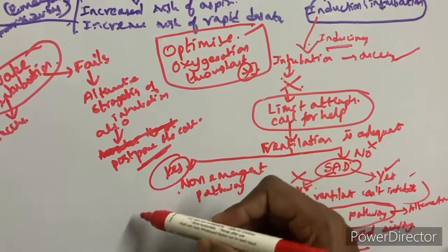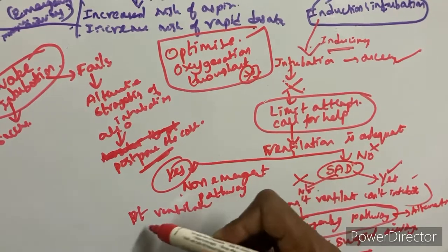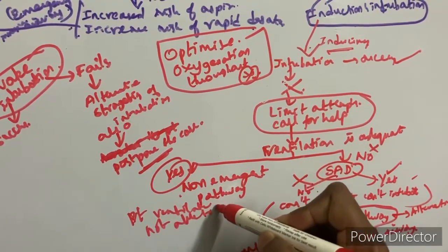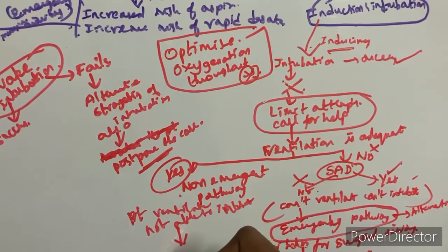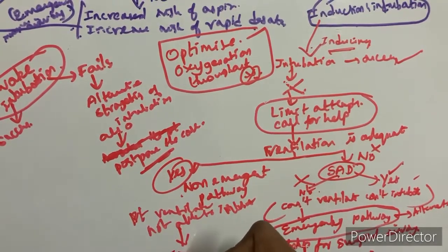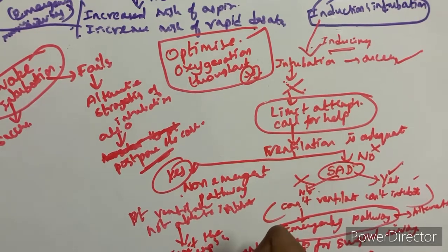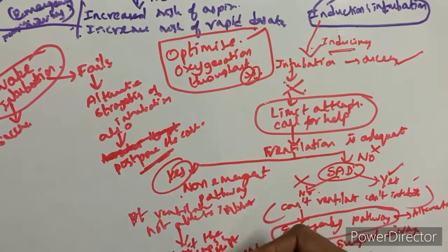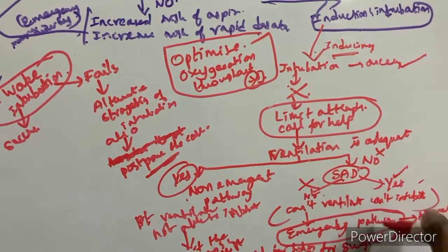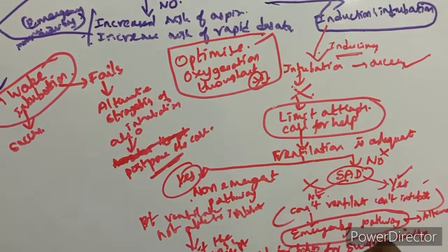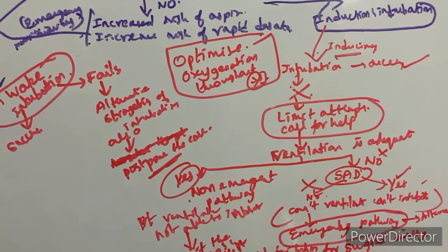On the non-emergent pathway, the patient is able to ventilate but not able to be intubated. In this situation, limit the attempts and awaken the patient. If alternative procedures are tried and succeed, proceed; if they fail, you may land back in a 'can't ventilate, can't intubate' state and must go for the emergency pathway — needle cricothyroidotomy or surgical tracheostomy.